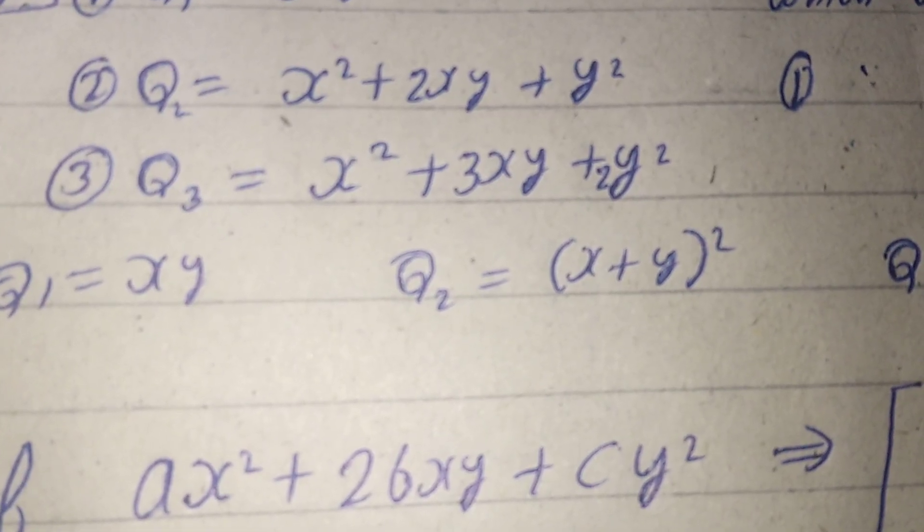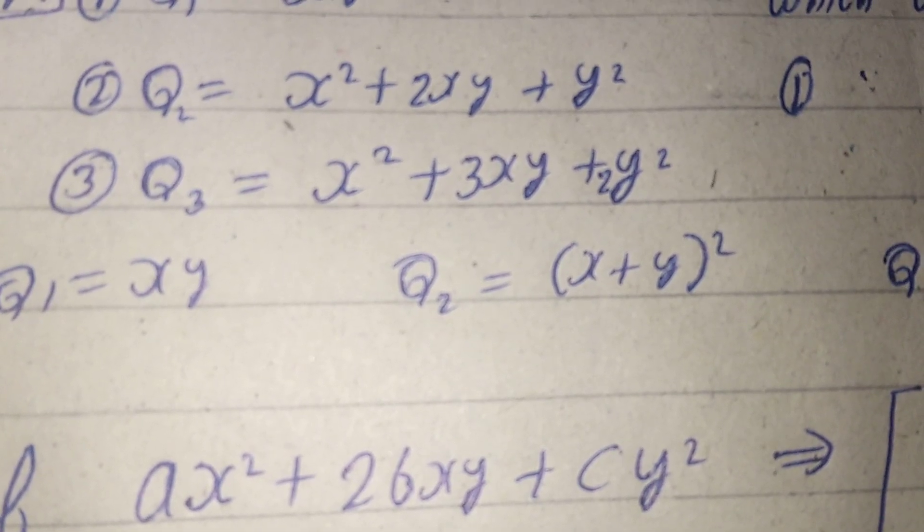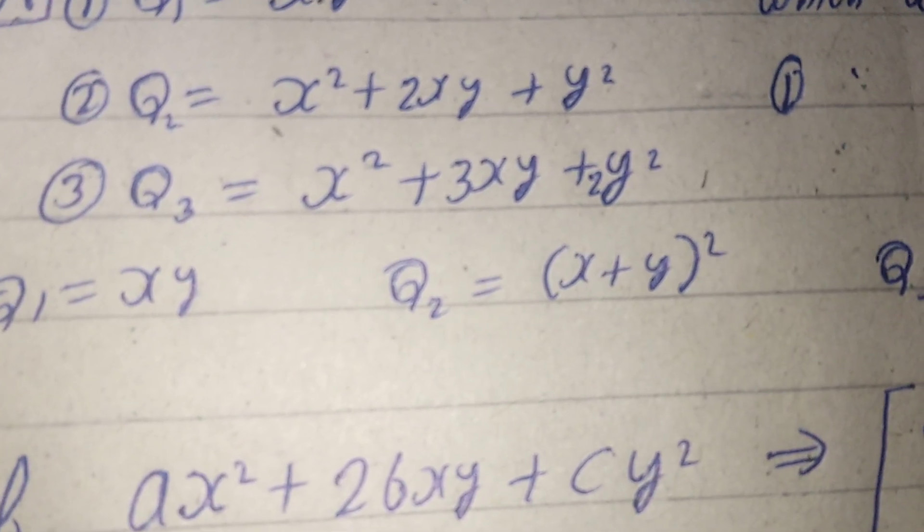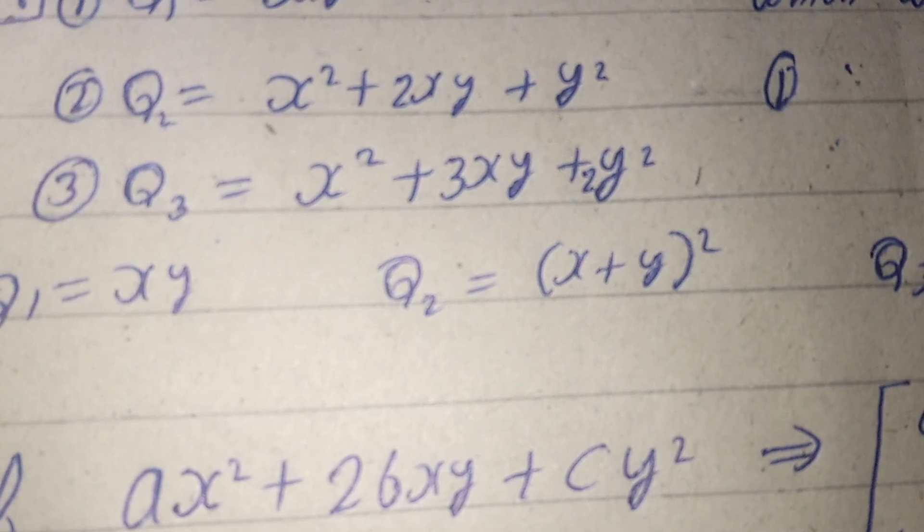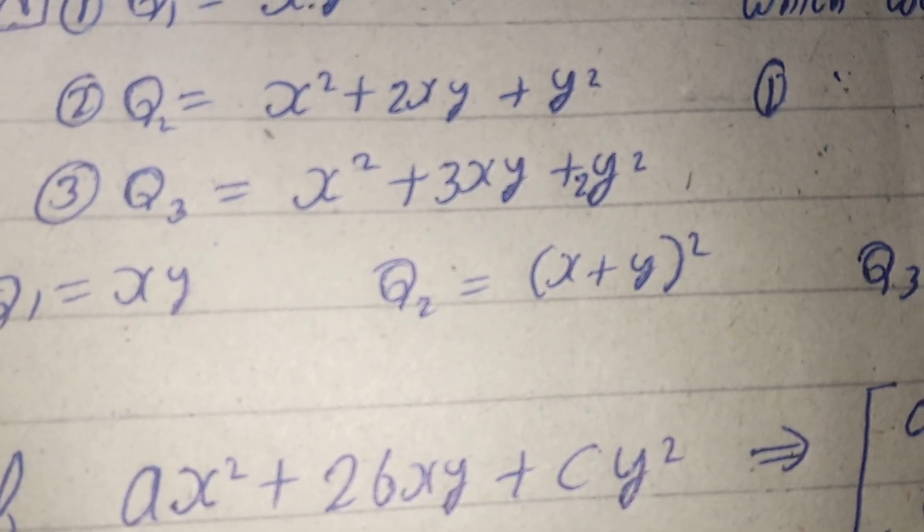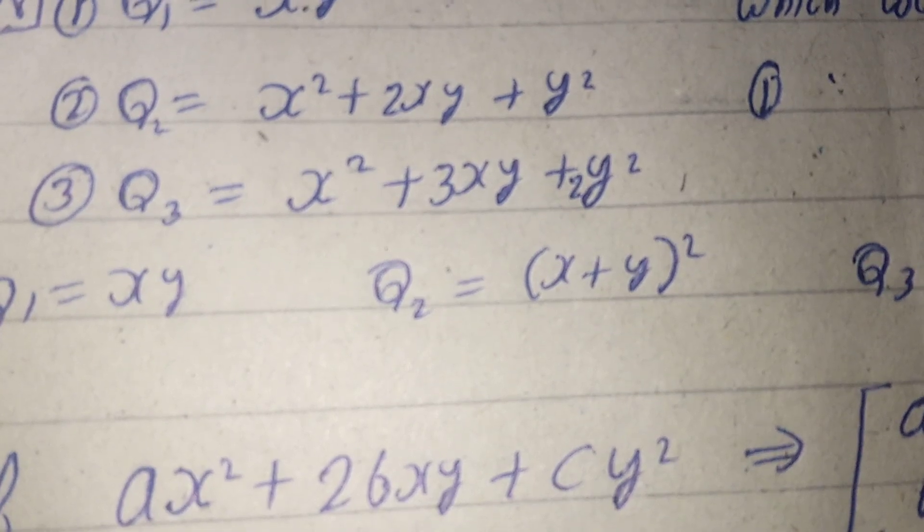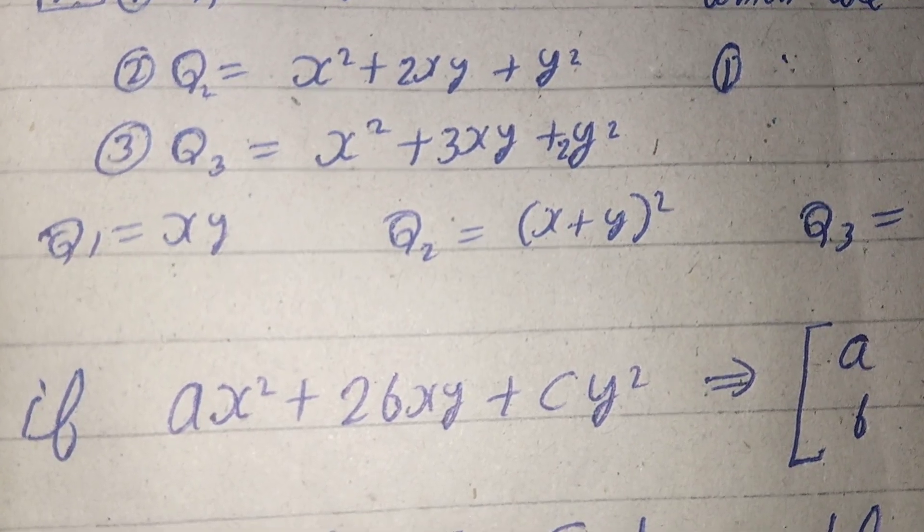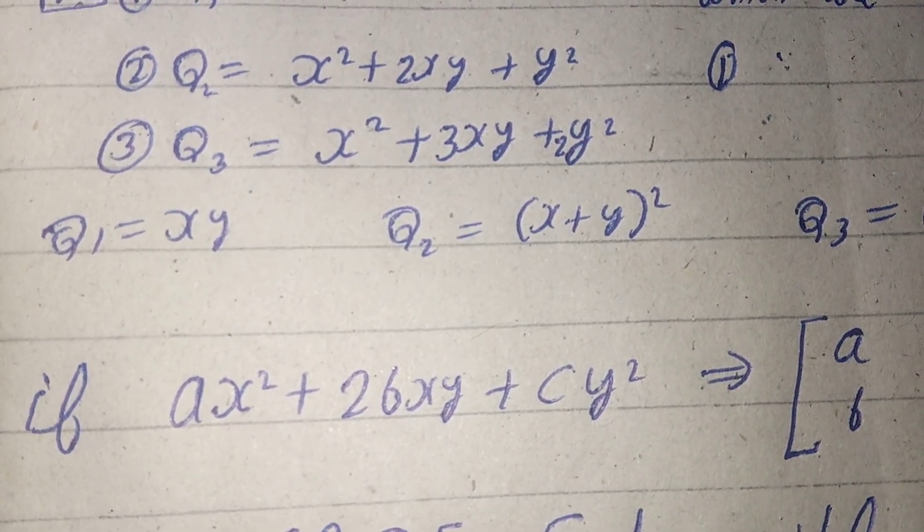But if we consider the second quadratic form, x² + 2xy + y², it is clearly a well-known identity which is (x + y)². And we know the square of any quantity is always non-negative, so q2 cannot attain negative values.